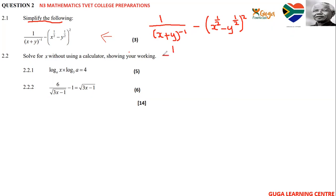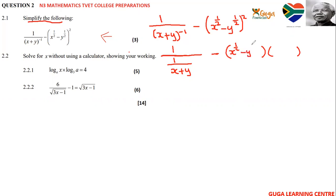It will be one over — mind you, this is the long division — and then here you'll have a small division for this particular expression, so it will be x plus y to make it positive. Then minus, because this is squared, so you're left with x to the one-half minus y to the one-half, then x to the one-half minus y to the one-half. The rule I used here says: if you have a to the power of negative one, this equals one over a — the rules of exponents.